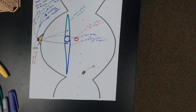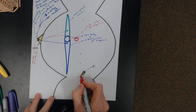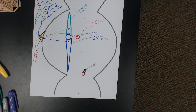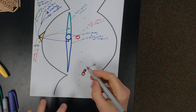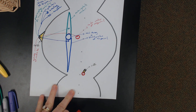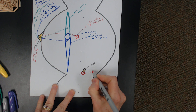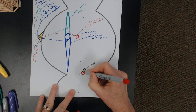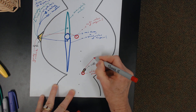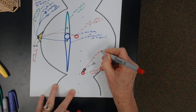Cranial nerve number six is an easy one because we just have one nucleus to deal with — that's going to be the abducens nucleus. Motor neurons in the abducens nucleus send out axons that innervate the lateral rectus.